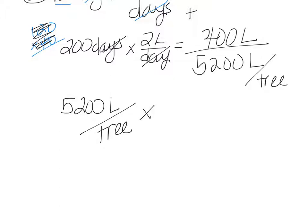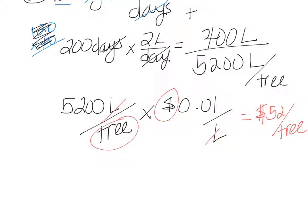So 5,200 liters per tree for the year is multiplied by a penny per liter. Now our liters cancel out. You could do this math in your head maybe, or if you needed to do it off to the side, that's fine. We're going to end up with dollars because this is our remaining unit, and we're going to end up with per tree. So it's going to cost $52 per tree to water the trees.